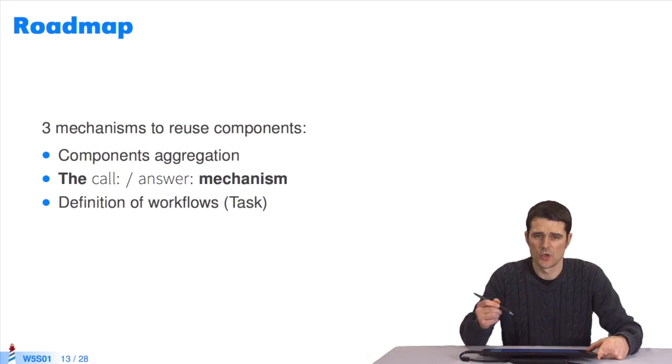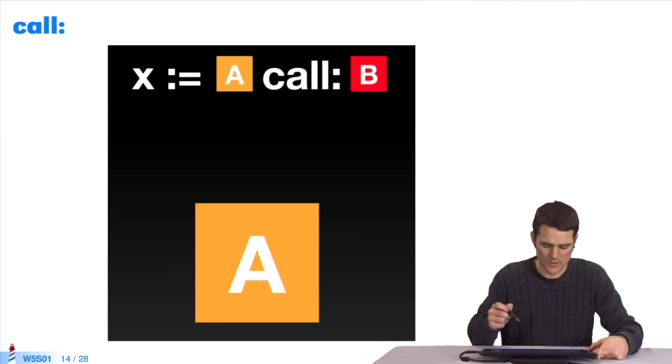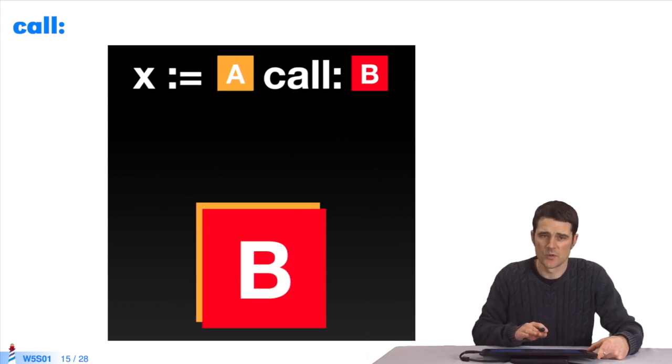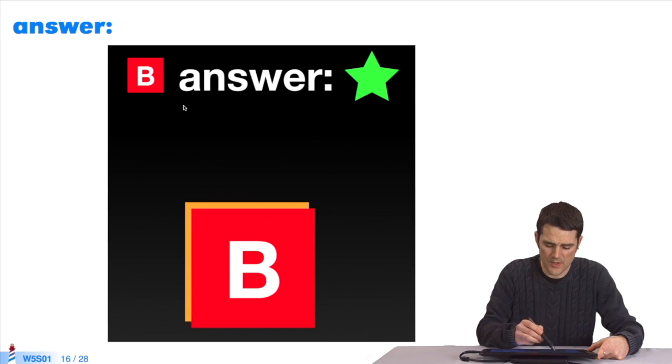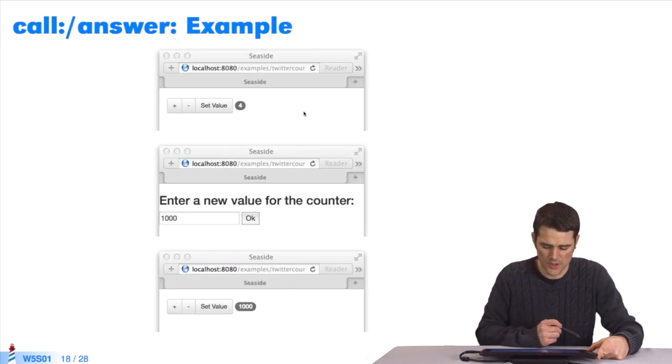We've a second composition mechanism, which is call-answer. We've seen component aggregation with subcomponents, and now we'll see the call-answer mechanism. If we imagine, in the code of component A, we'll write something that looks like this code. We'll say, component A calls component B. What will happen is, component B will mask component A on the webpage. It will carry out a treatment. And after a while, component B will say, I've done my treatment. I'll do answer, and give a result. Here, the result is a star. And this result will be stored in x, in the place of call component B. Now component A will reappear on the webpage, and component A can use this result to do something.